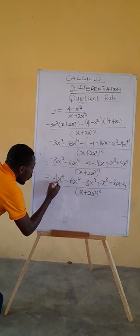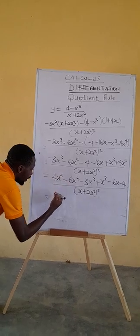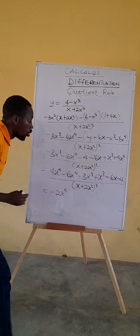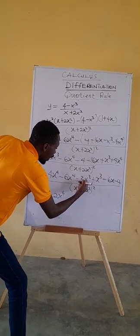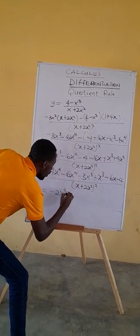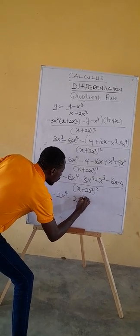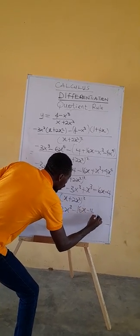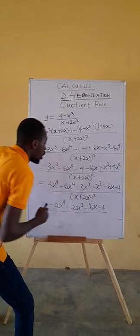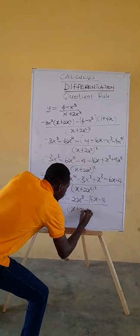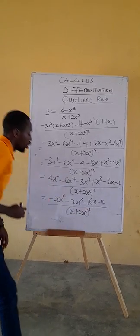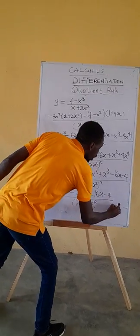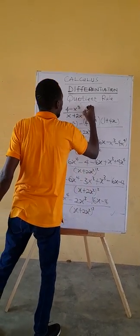So the final answer is: minus 2x⁴ minus 2x³ minus 16x minus 4, all over (x plus 2x squared) squared. This becomes the derivative function of this expression.